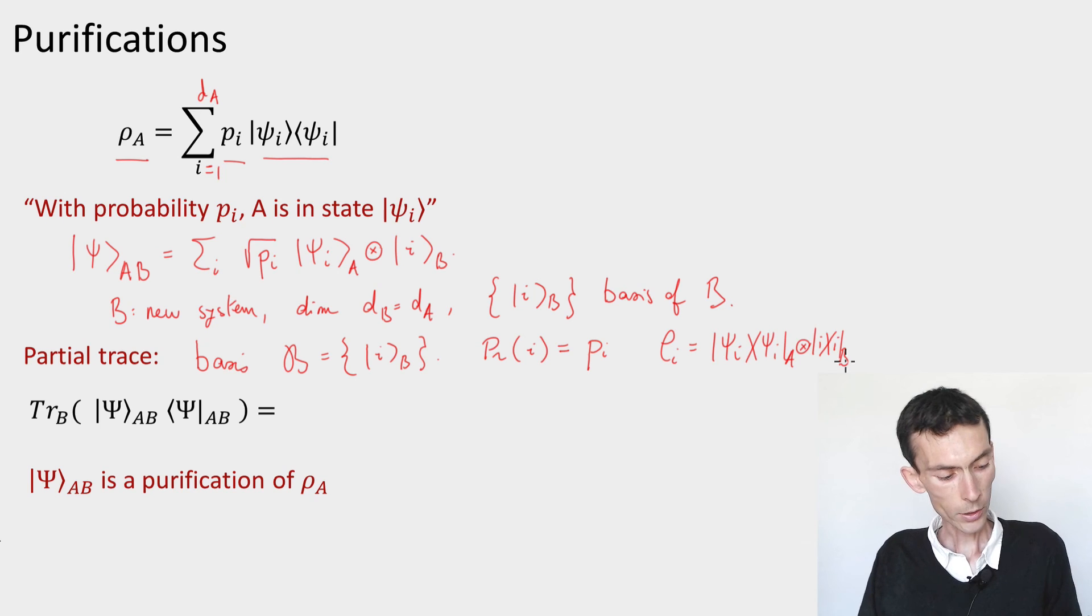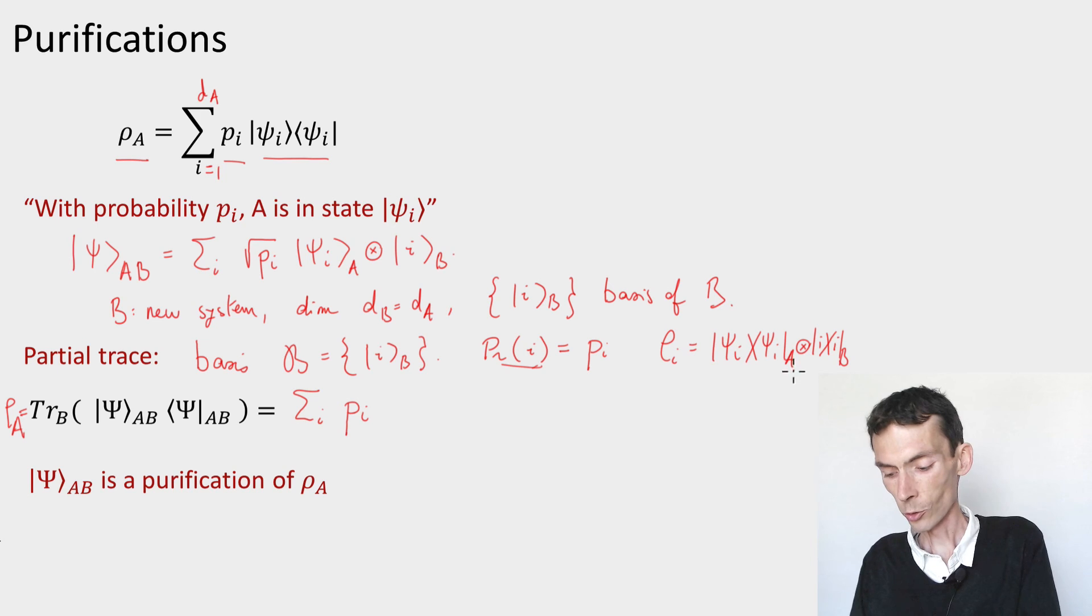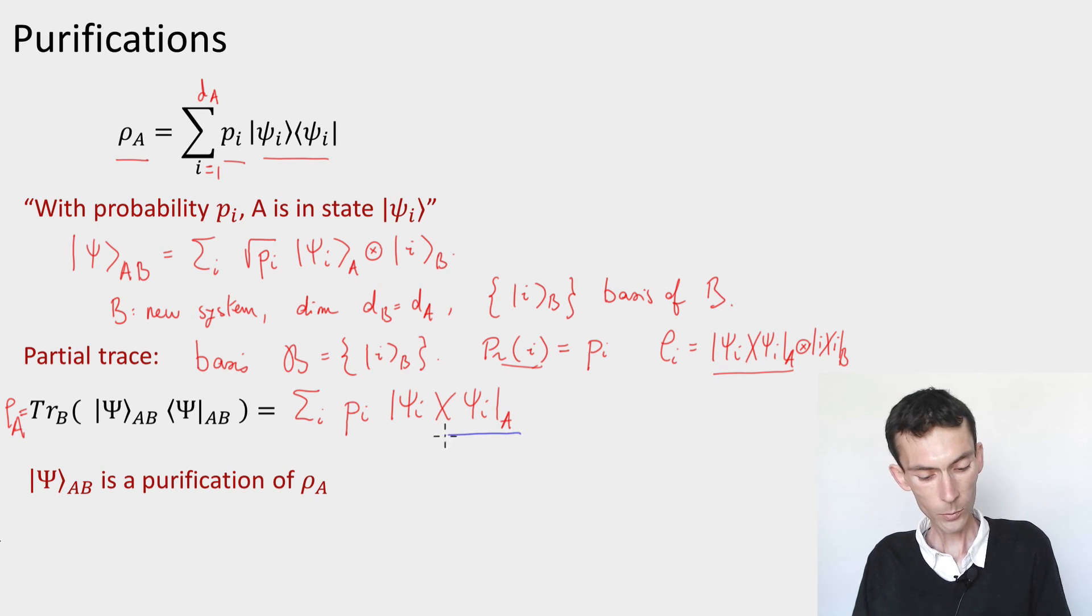And so this tells us that the overall reduced density rho A on the A system, obtained by taking the partial trace operation, will be the sum over i of the probability that we get i. This is pi, tensored with the reduced density on A that's associated with rho i. So that's just the rank one projection on psi i. And you can verify that as claimed, the results that I obtained here is exactly the state that I started from.